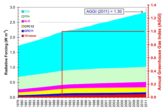At present, the primary source of CO2 emissions is the burning of coal, natural gas, and petroleum for electricity and heat.